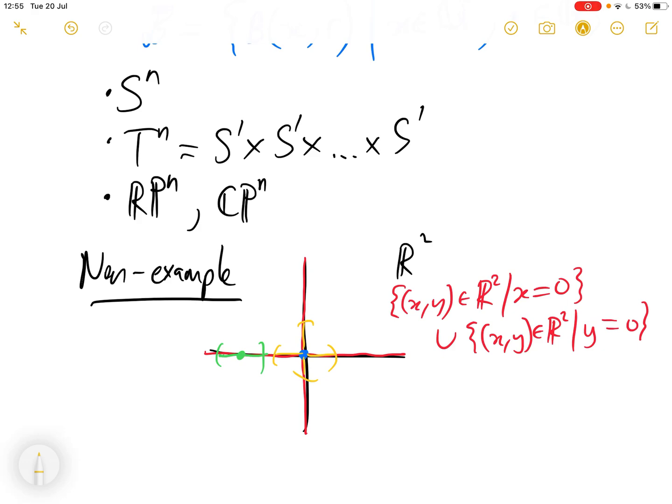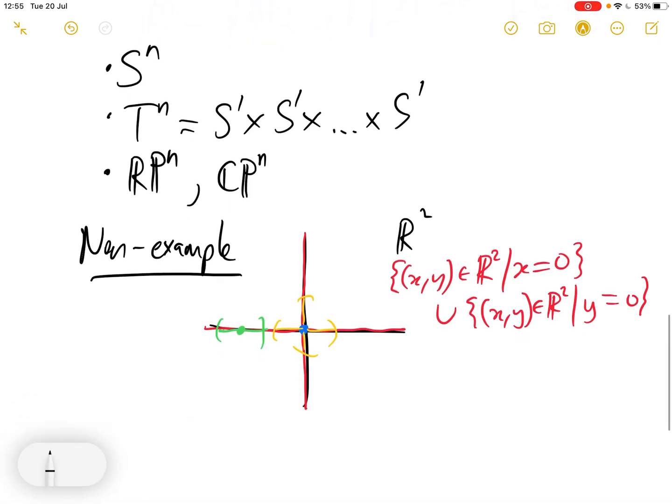Why is this yellow neighborhood not homeomorphic to R? Well, if we remove the blue point from this yellow neighborhood, it separates it into four connected components. But for any set that's homeomorphic to R, if you remove a point it always separates it into two connected components. For example, this green interval - if I remove any point from it, we have two connected components. But for this yellow neighborhood, removing this blue point splits it into four components. So this is not locally Euclidean of dimension one. This is not a manifold.